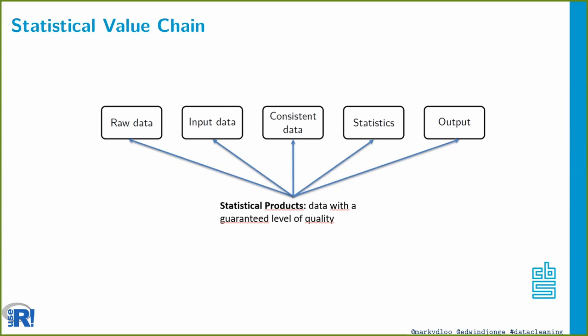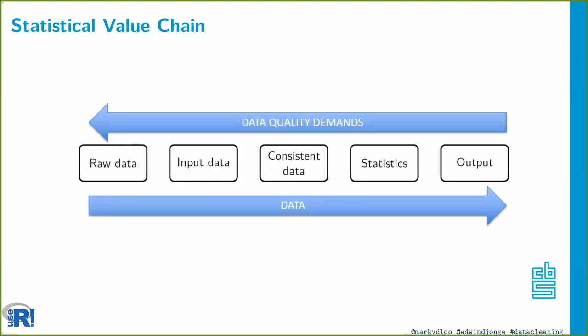In our office, this way of thinking is also the basis for setting up much larger production systems — departments with dozens of people producing sets of statistics. All those production systems are designed with this as the basic principle: you define a number of intermediate steps each with a well-defined level of quality. Data travels from left to right, but your data quality demands travel from right to left. Conceptually this is a good way to organize your thoughts around setting up a production system.